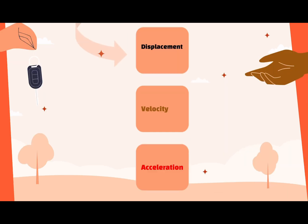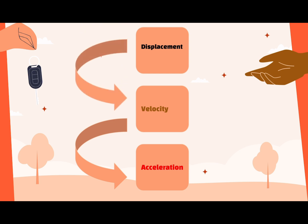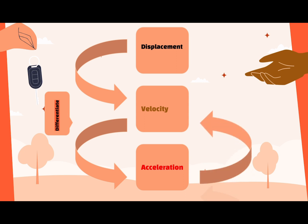So, how are displacement, velocity, and acceleration related? And how can I go from displacement to velocity, and from velocity to acceleration? I can differentiate a mathematical function one time to find the velocity and differentiate it a second time to find the acceleration. But what if I want to go from acceleration to velocity and from velocity to displacement? I would integrate that mathematical function one time to find the velocity, and then integrate it a second time to find the displacement.